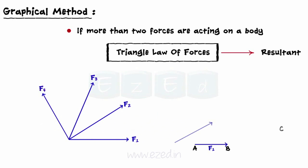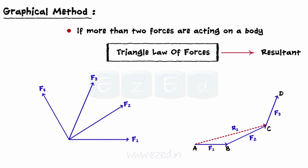AB represents F1 and BC represents F2. As per triangle law of forces, AC represents the resultant of F1 and F2, say R1. Now, CD is drawn to represent F3. Then, in triangle ACD, AC represents R1, CD represents F3, and therefore AD represents the resultant of F3 and R1. That is, AD represents the resultant of F1, F2, and F3, say R2.